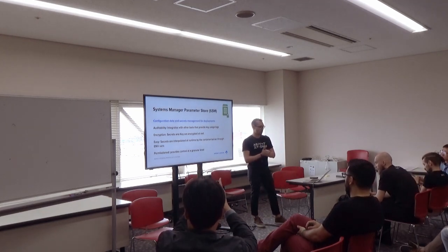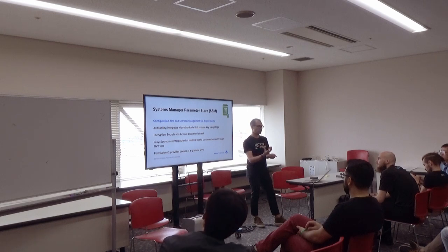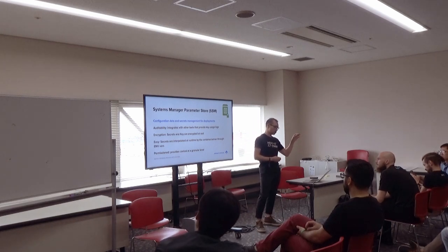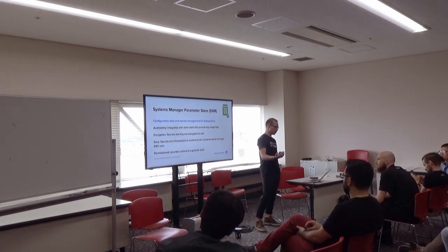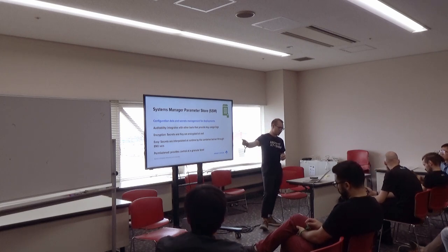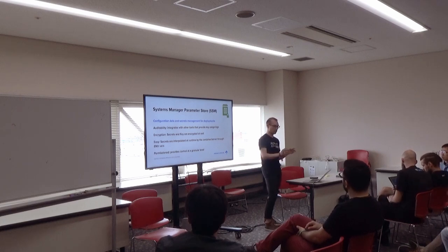There's the Systems Manager Parameter Store, which is pretty similar to Ansible Vault if you've ever used it. The Systems Manager really shines with regards to secrets that are interpolated at runtime. Its auditability, encryption, and permissions are all pretty standard AWS services. But it's very easy to use — most of these are just injected into container services through environment variables, and they're never visible.